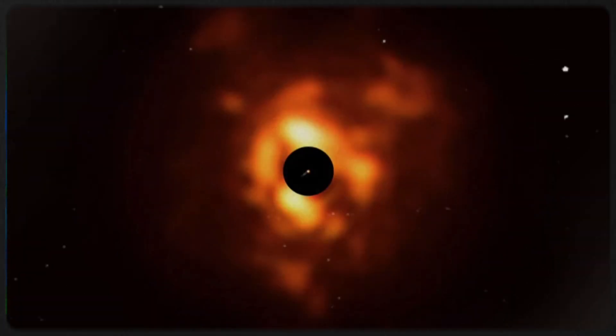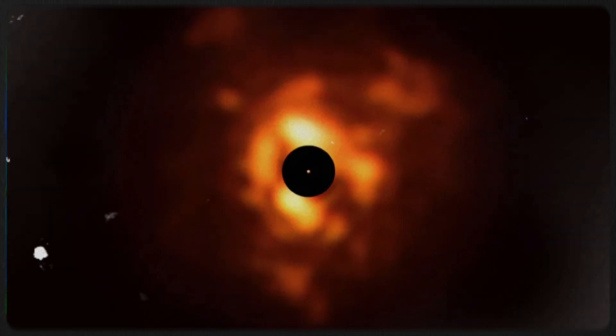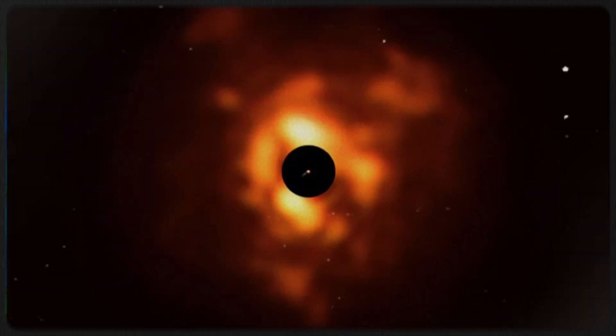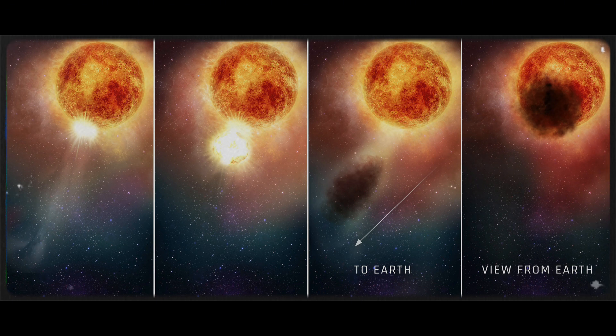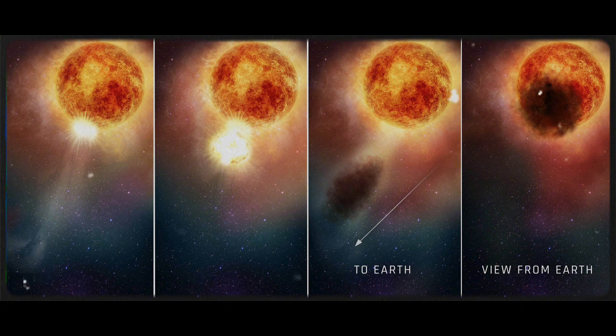What's even cooler is how this cloud came to be. It likely started as super hot plasma erupting from a huge convection cell on the star's surface. As this plasma moved through Betelgeuse's atmosphere and cooled, it turned into dust grains, creating a cloud that dimmed about a quarter of the star's surface.